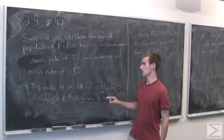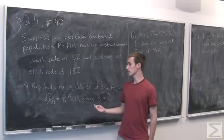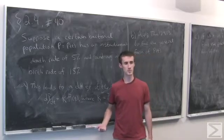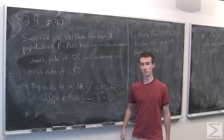This leads to the differential equation dp/dt, the rate of change of the population at time t, equals k times the size of the population itself. So the rate of change is proportional to the population.